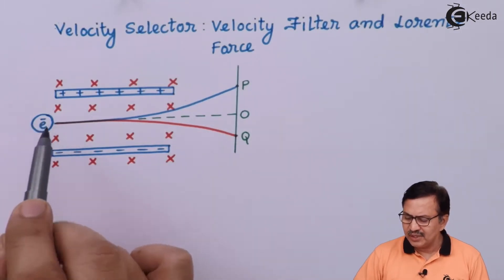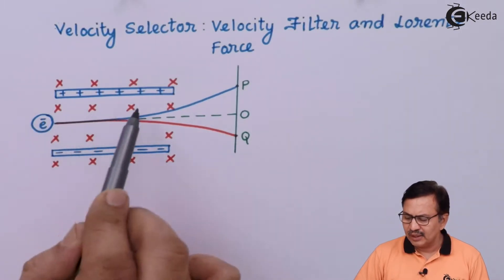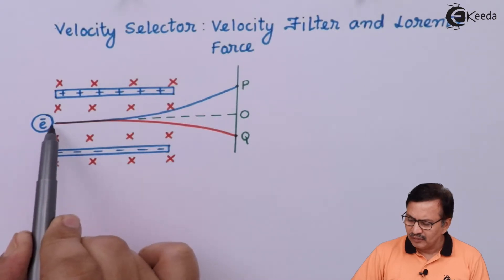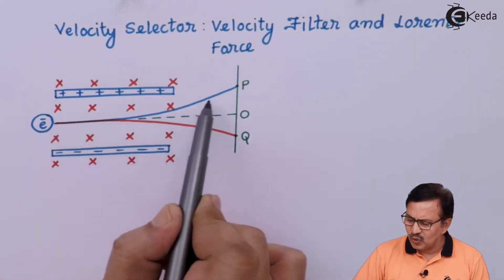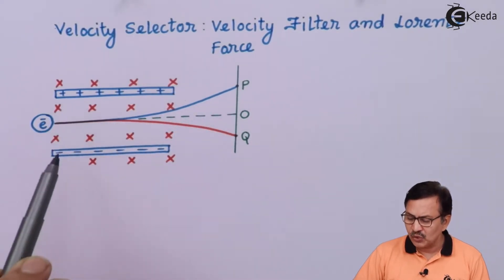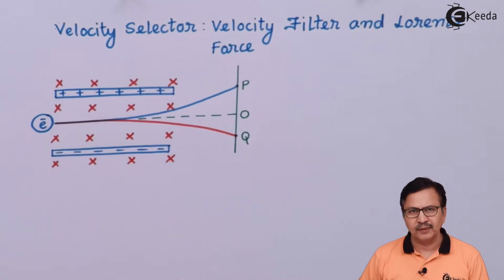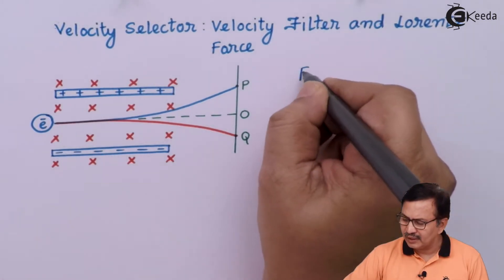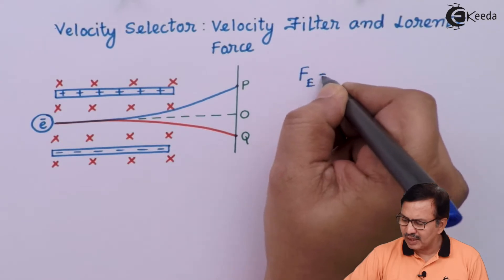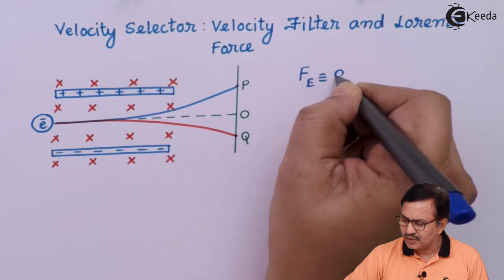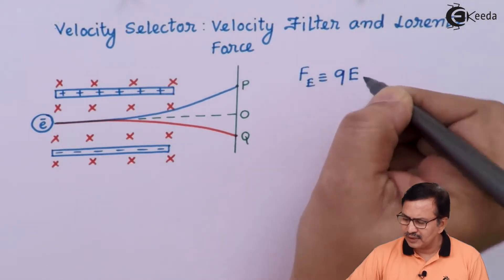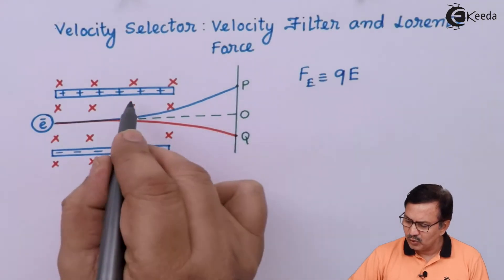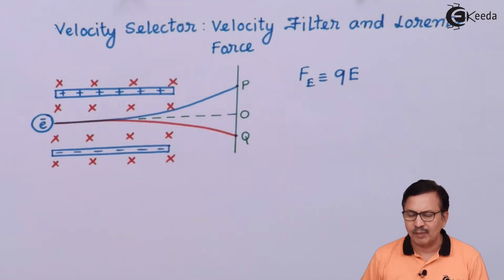When I am introducing an electron in this region, it will so happen that the electron will try to move up if at all there is only electric field, and the force acting due to the electric field will be equal to Fe = Q × E. So it will move towards the positive plate and it will move up.